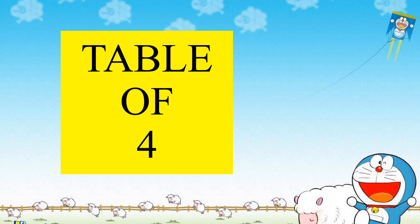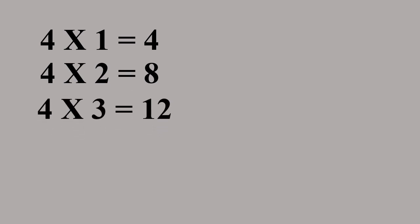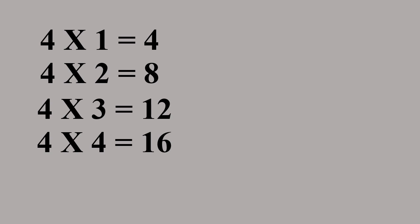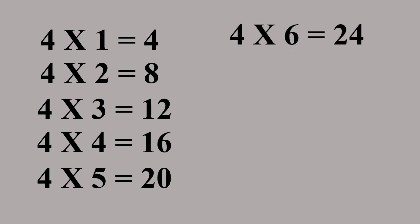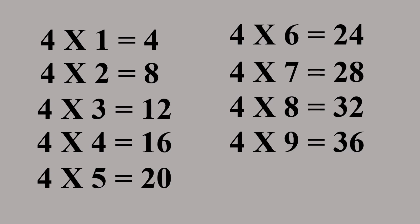Table of 4. 4 1s are 4. 4 2s are 8. 4 3s are 12. 4 4s are 16. 4 5s are 20. 4 6s are 24. 4 7s are 28. 4 8s are 32. 4 9s are 36. 4 10s are 40.